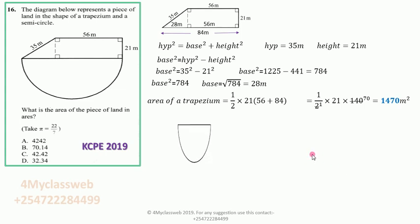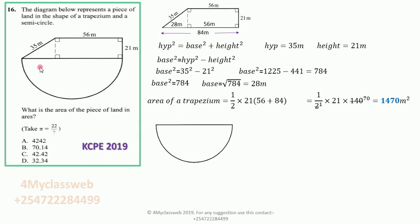Now let us look at the semicircle. A semicircle is made up of a curved part and a straight line which is the diameter of the complete circle. This diameter is already what we have from one end to the other end — that is 84 meters. Therefore, the diameter of this semicircle is 84 meters.